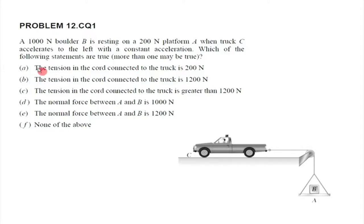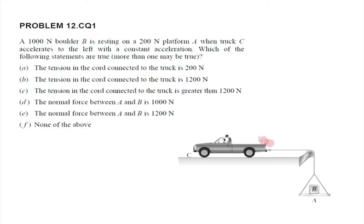First alternative: the tension in the cord connected to the truck is 300 Newton. So this weight is 200 Newton and this is 1000 Newton, so the total weight is 1200. The statement says the tension in the cord connected to the truck is 1200 Newton. Now, we have to think: if the truck were stationary, this is 1000 and this is 200, so overall it is 1200. But is this true or not?